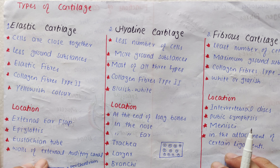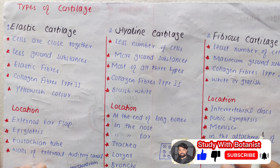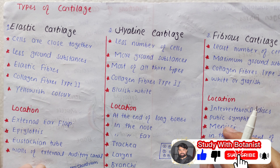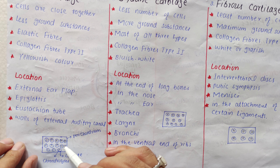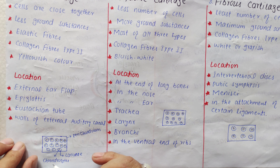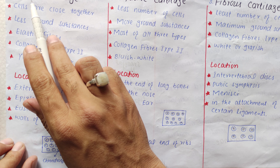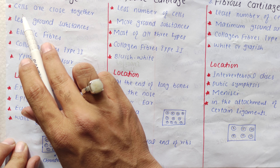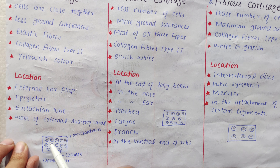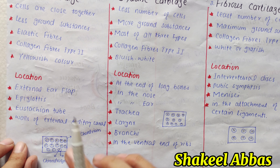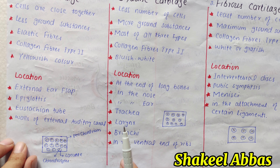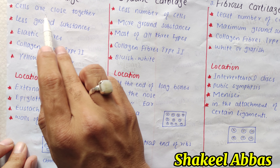ہم باری باری ایک ایک type کو discuss کرتے ہیں۔ سب سے پہلے elastic cartilage دیکھتے ہیں۔ Elastic cartilage میں ہمارے پاس ایک ground substance ہے اور chondrocytes ہیں۔ Elastic cartilage میں جو cells ہیں وہ ایک دوسرے کے ساتھ close ہیں، یعنی اس میں chondrocytes بہت زیادہ ہیں as compared to other cartilage types۔